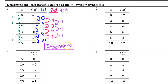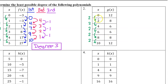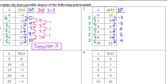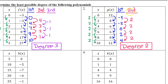Pause the video and try number 2 on your own. The input values show a common difference, so we can use the trick. Looking at the output values, the first difference is not constant, so g of x is not degree 1. However, the second difference is constant, so this polynomial is degree 2.